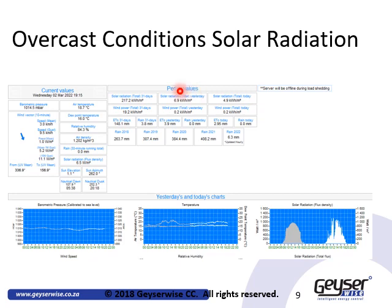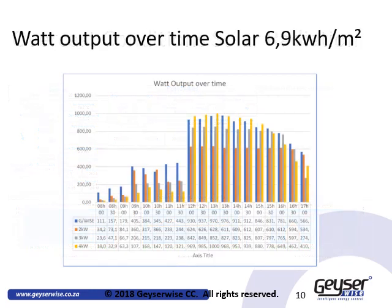On this slide we have the solar radiation values for the 1st and 2nd of March. During the next two slides we will illustrate the effect of fixed resistance heating elements versus variable resistance heating elements with the MPPT. On this day we had overcast cloudy conditions, and from this you will observe that the GizaWise with variable resistive heating elements actually outperformed all of the others by far.